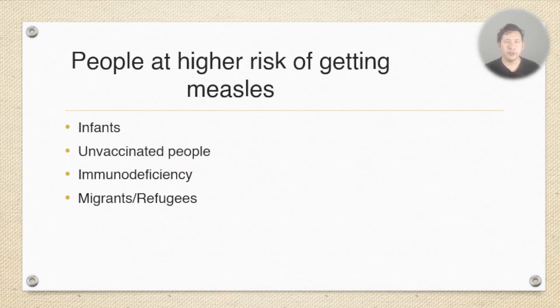So who do we have to be particularly careful about measles with? Infants who haven't been fully vaccinated yet, people who haven't been vaccinated at any age, and then people who can't be vaccinated or don't have a sufficient response to vaccines because they're immunodeficient. And then migrants or refugees, especially if it's recent and especially if they didn't necessarily complete a course of vaccination in their childhood.